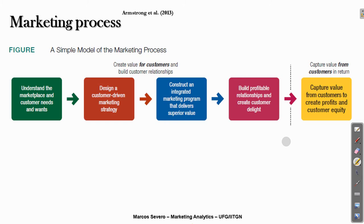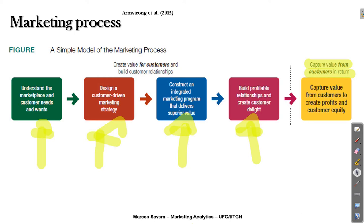This illustration is a representation of the marketing process inside the organization, where the main output is to capture value from customers in return. Companies need to capture value from customers to create profits and customer equity. Inside the organization, there are four major steps. The first is to understand the marketplace and customer needs and wants, using marketing research with internal datasets, experimental data, and survey data — primary data that will base marketing analytics decisions.